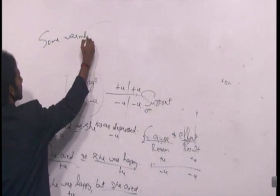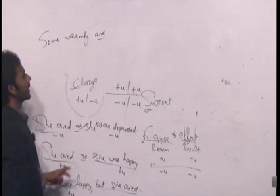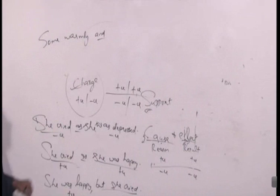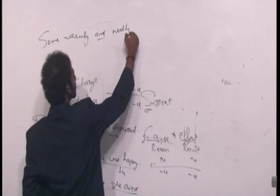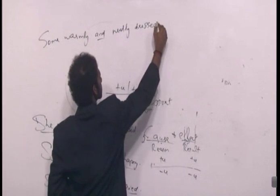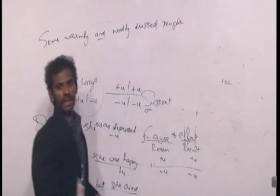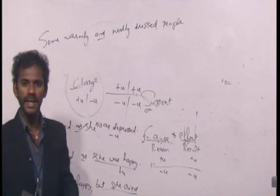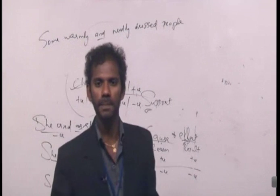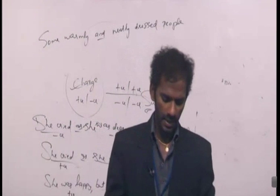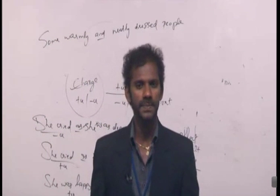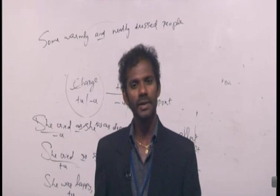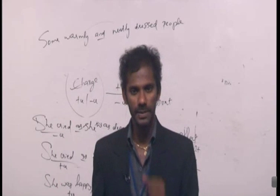Now consider: 'Some warmly and neatly dressed people.' 'And' is a support indicator — it should connect either two positive or two negative ideas. Is 'warmly' a positive word? Think of 'a warm welcome' — warm is a positive word. And 'and' is a support indicator. The two ideas connected by 'and' here are 'warmly' and 'neatly.' If the second idea 'neatly dressed' is positive, the first idea 'warmly' must also be positive.